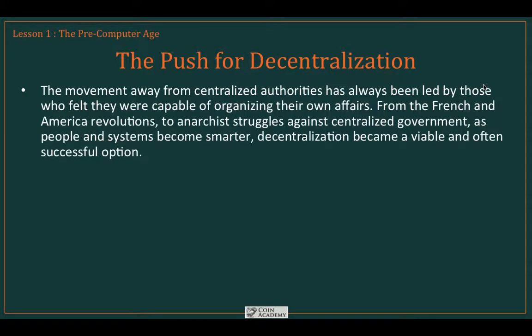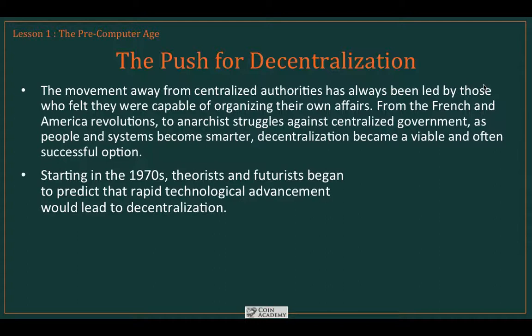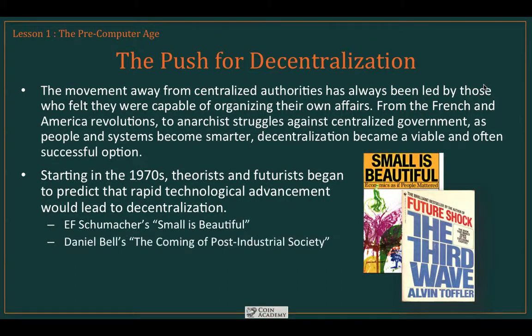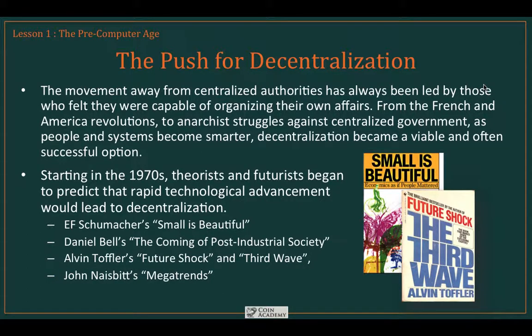The movement away from centralized authorities has always been led by those who felt capable of organizing their own affairs, from the French and American revolutions to various struggles against centralized government. As people and systems became smarter, decentralization became a viable and often successful option. Starting in the 1970s, theorists and futurists began to predict that rapid technological advancement would inevitably lead to decentralization. Two of the more popular books were Alvin Toffler's Future Shock and The Third Wave, but John Naisbitt's Megatrends was also quite important, as was E.F. Schumacher's Small is Beautiful.